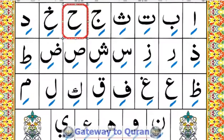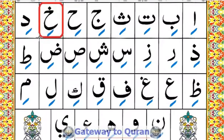Haa kasra = hi. Kha kasra = khi. Dal kasra = di.